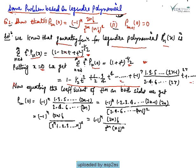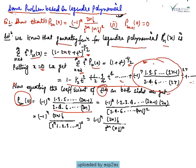Now equating the coefficient of T^(2n) on both sides: on the left side, replacing N with 2n gives P_n(0). On the right side, the coefficient of T^(2n) is (-1)^n times (1·3·5···(2n-1)) divided by (2·4·6···2n).